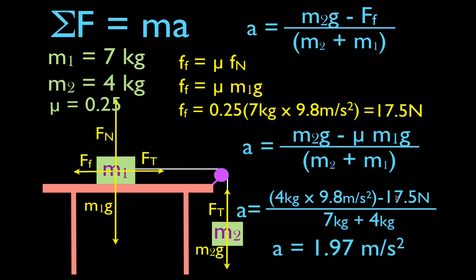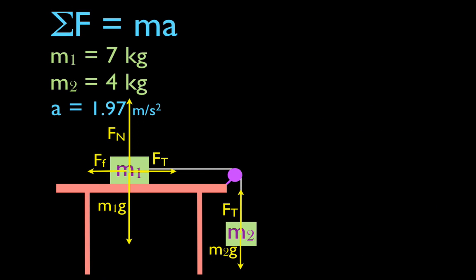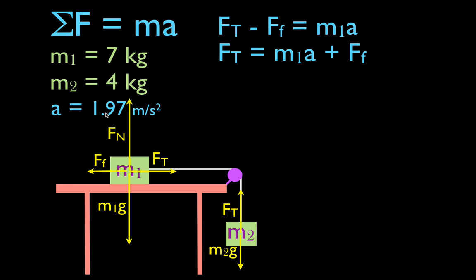That's the acceleration — 1.97 meters per second squared. Make sure you pay attention to your positive and negative signs. Now we find the tension in the string. Applying Newton's second law to M1 only: the positive tension force minus the friction force equals M1 times the acceleration. Solving for the tension force by moving friction to the other side, we get the tension force equals M1 times a plus the friction force, which gives Ft equal to 31.1 newtons.